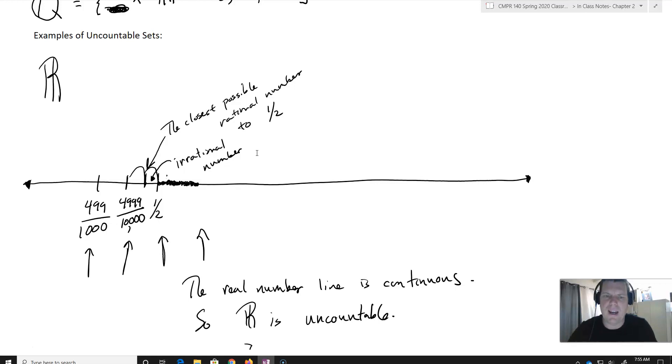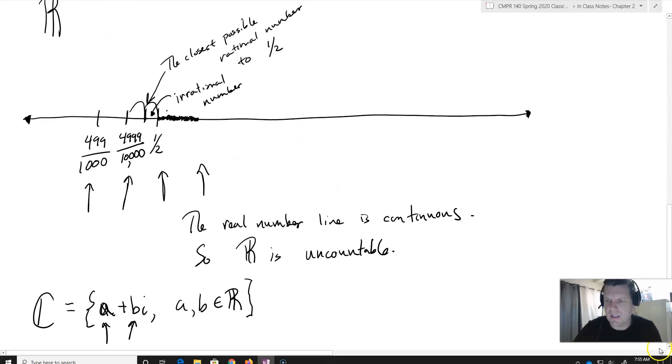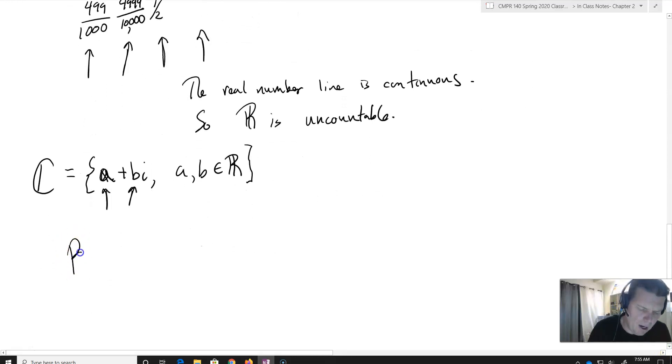So what we say, just to kind of put this into picture form, we're going to have that R, its cardinality is going to be greater than, for example, the rationals.